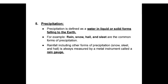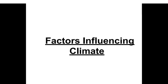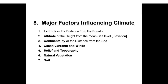Precipitation is defined as water in liquid or solid form falling to the earth — rain, snow, hail, and sleet are common forms. Rainfall and other forms of precipitation are measured by a metal instrument called a rain gauge. Major factors influencing climate: latitude (distance from the equator), altitude (height from mean sea level), continentality (distance from the sea), ocean currents and winds, relief and topography, natural vegetation, and soil.